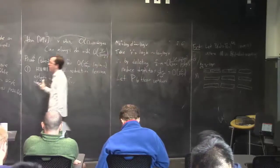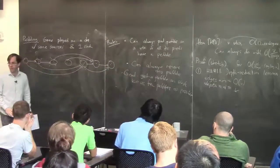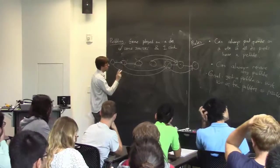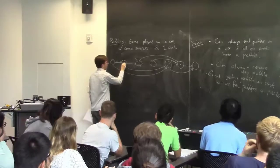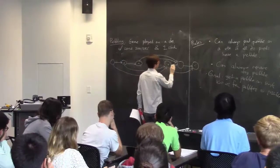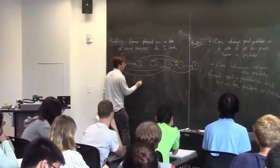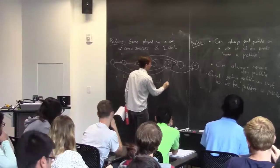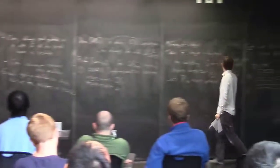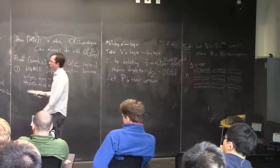The depth-first-pebble algorithm works by recursion. For each predecessor w of u — at most C predecessors by bounded in-degree — if w is not already pebbled, recursively call depth-first-pebble(w, don't-delete ∪ predecessors-of-u). Once all predecessors of u are pebbled, place a pebble on u. Then clean up: remove all pebbles except don't-delete and u itself.